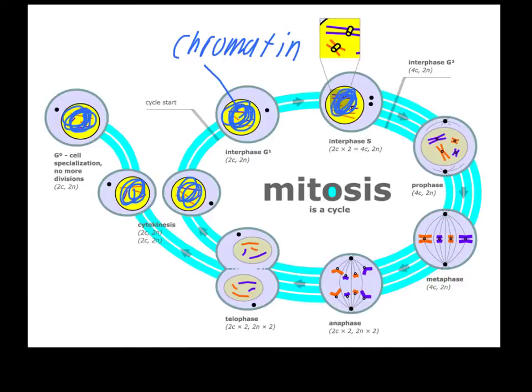Then in prophase there's a few things that are going on. One of them that's not well represented here is that the membrane begins to break down. So this should kind of be like a dashed line, like it's represented in your textbook. The chromosomes condense, the centrioles begin to move to either pole, and they start to produce the spindles.